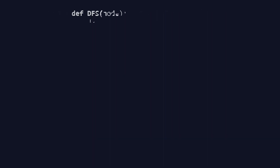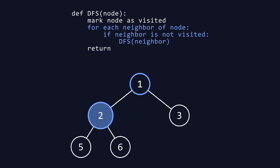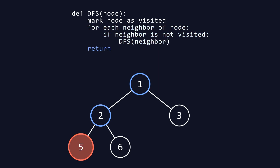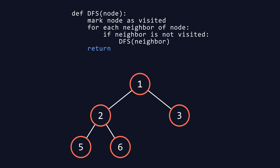Here is a simple implementation of DFS. The function takes a node as input. First, it marks the node as visited to avoid revisiting it. Then, it loops through each neighbor of the current node. If a neighbor hasn't been visited yet, the DFS function is called recursively on that neighbor. This process continues, diving deeper until all reachable nodes from the starting node have been explored. Finally, the function returns, completing the depth first traversal.